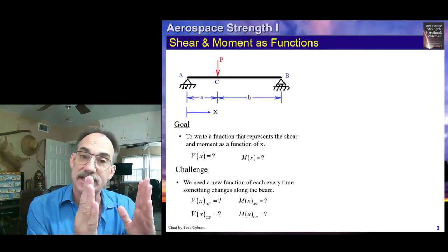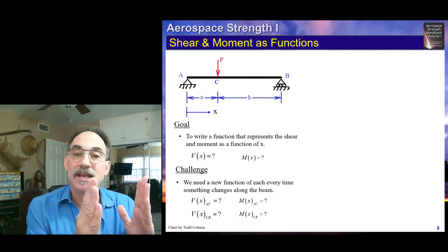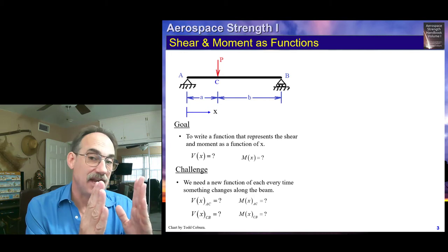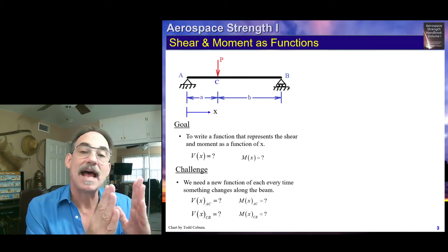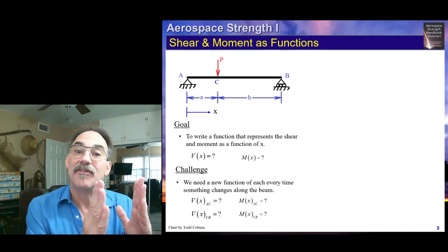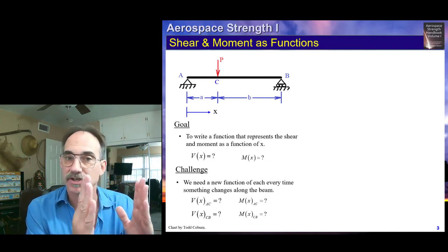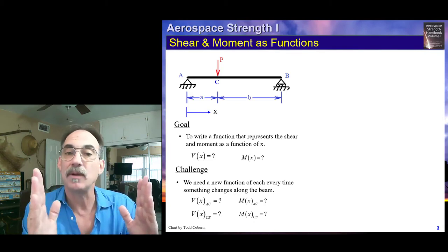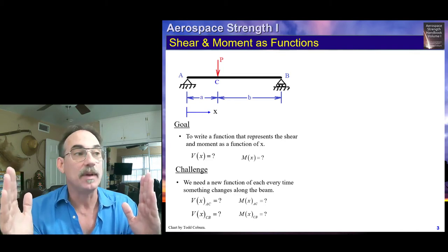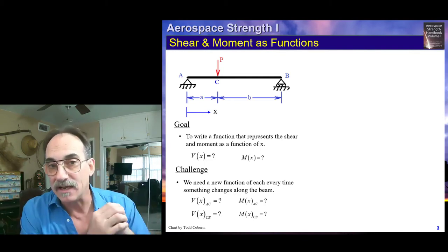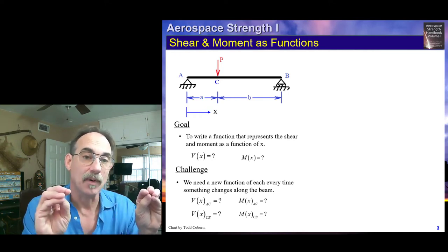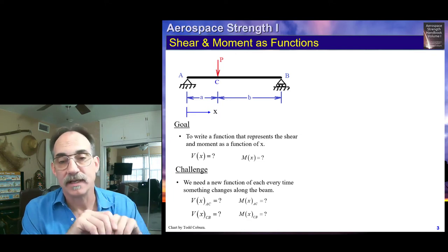The challenge is we're going to need a different function every time something changes along the beam. Moving from left to right, between A and C there are no other external loads introduced, so one function will be needed for shear V(x) and one for moment M(x). Once we pass node C, there is a change to the applied external forces, which will likely change the internal forces. So we need a different function for shear and moment from C toward B. Once we reach the right end, we're done — we don't need a third function. This beam requires two functions for shear and two for moment.